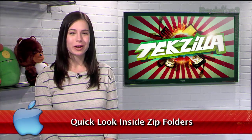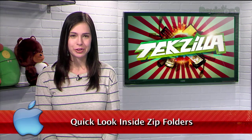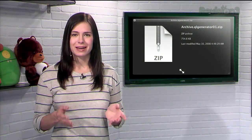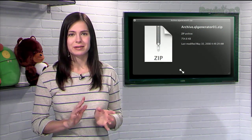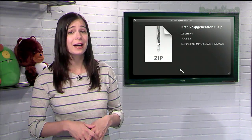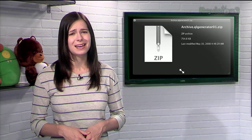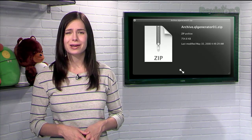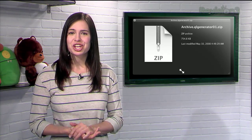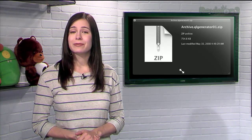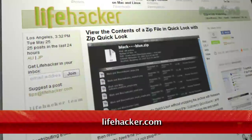OS X's Quick Look feature allows you to preview files simply by pressing the space bar. But if you try this trick on a zip file, you'll just see a zip icon and some bare details about the file, like the date modified and the size. Not very helpful, is it?